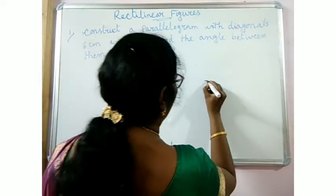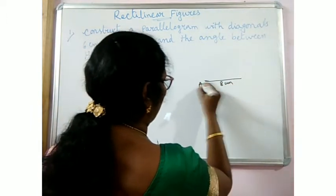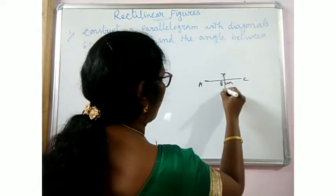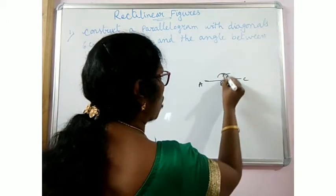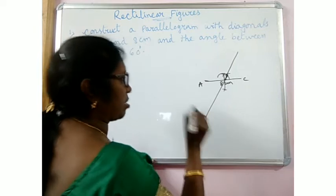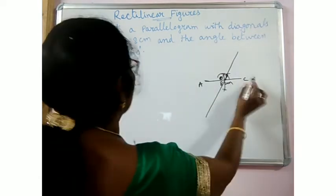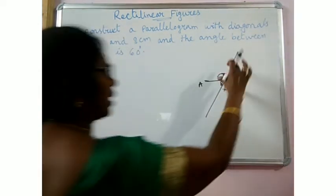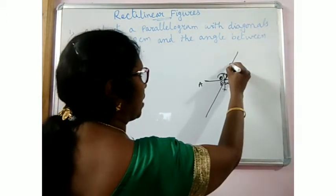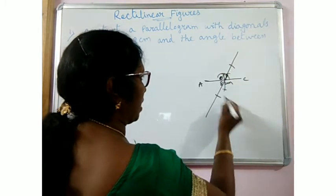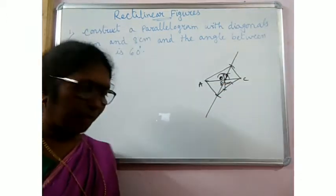Let me take one diagonal — the diagonal 8cm — and name it as AC. Bisecting it, you will get the midpoint. Let us construct a 60 degree angle here, then join these and produce both the sides. Let the point of intersection of the two diagonals be O. If AC, one diagonal, is 8cm and the other is 6cm, the two parts are 3cm and 3cm. O to B and O to D will be 3cm. From here give an arc of 3cm, and from here give an arc of 3cm. Now join these and you will get the parallelogram. This is the rough diagram.